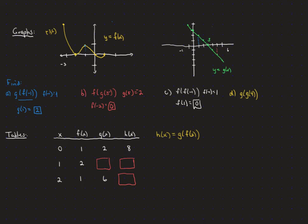For g of g of 4, we go to the g function at 4 and read the y-value as negative 1. Then we take g(−1), which gives 4. So g of g of 4 equals 4.